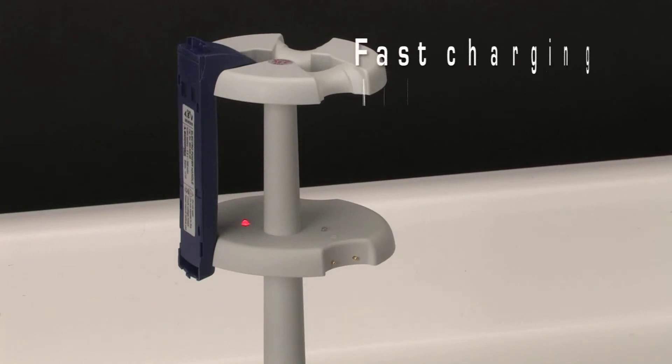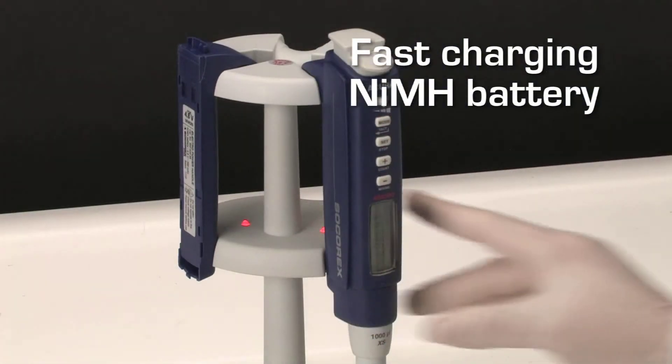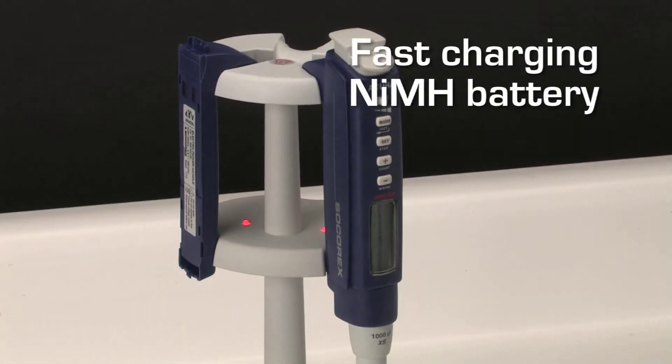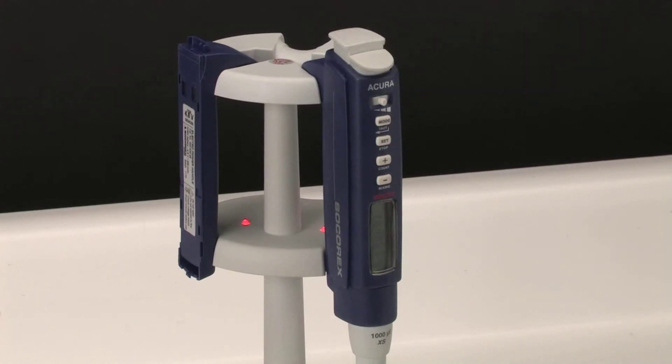Electro pipets can be charged two ways: charging the pipet together with the battery or just the battery by itself. When charging starts, the LED turns to red.